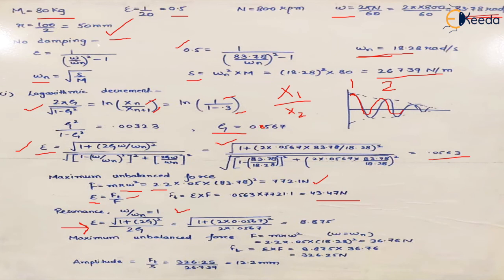We calculate the maximum unbalanced force MRω² when omega equals omega_N, which is 18.28 rad/s. omega_N is fixed when designing any system; the natural frequency is decided at the beginning and what changes is the working frequency. For the resonance condition, we use the value of omega_N to find the maximum unbalanced force, and multiplying by epsilon gives the transmitted force at resonance.